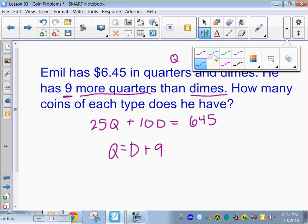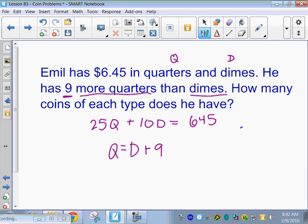This is set up for substitution or elimination, you guys. Yeah, because I've already got Q by itself, it's probably faster to do substitution on this one and just plug in for Q. Alright. So, I have 25 and I'm going to replace the Q with D plus 9 and then we still have plus 10D equals 645.